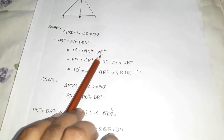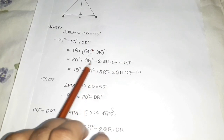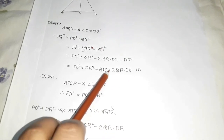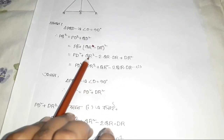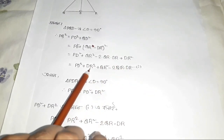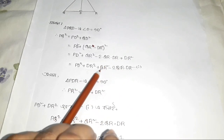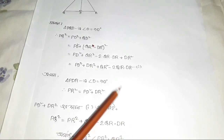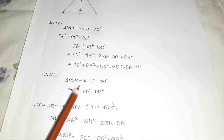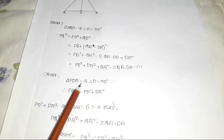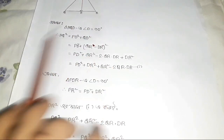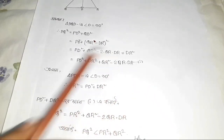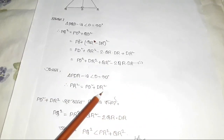AR is equal to QR minus QR, DR plus DR squared. That's why PR squared plus DR squared is equal to QR minus QR, DR squared. And we have to write QR minus DR squared, which is QR DR squared.